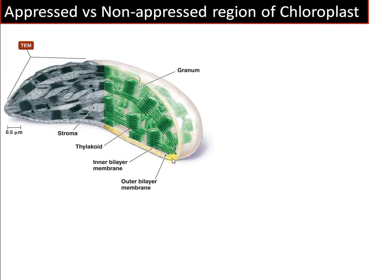This is the chloroplast. Inside the chloroplast there are membranous sacs or disc-like structures that are stacked one above the other, which is called a granum, and the individual units are called the thylakoid membrane.